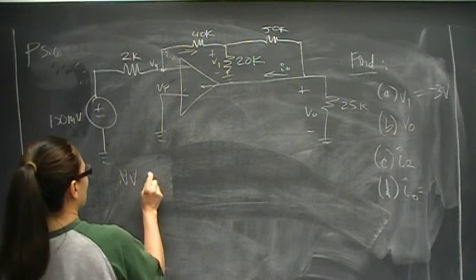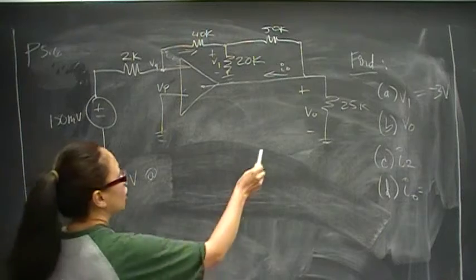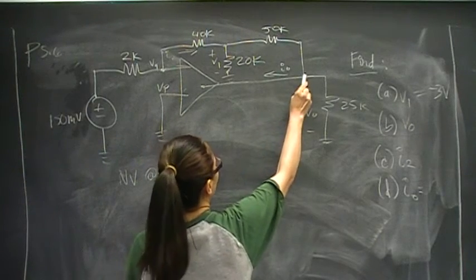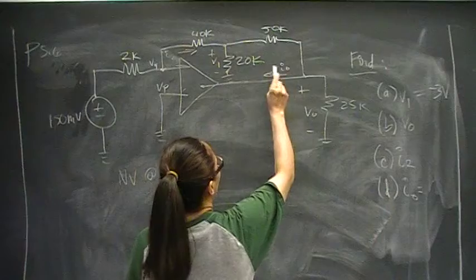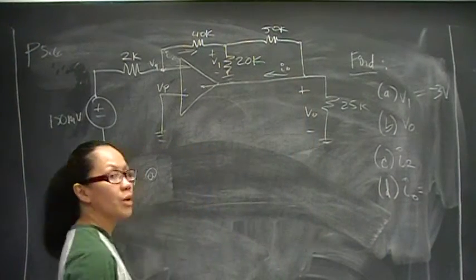So node voltage at Vout. I want to mention, you couldn't solve for Vout from node voltage here because this is a value, I0 is a value. We'd have one equation and two unknowns. It wouldn't have worked there.